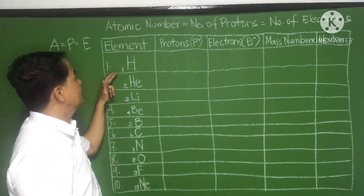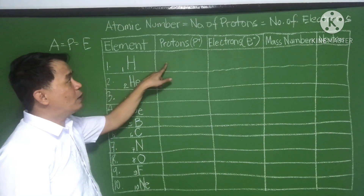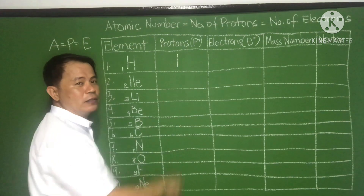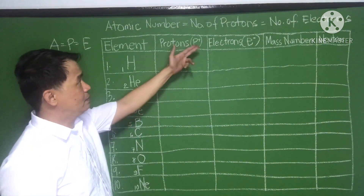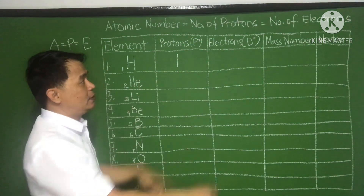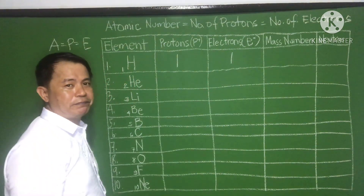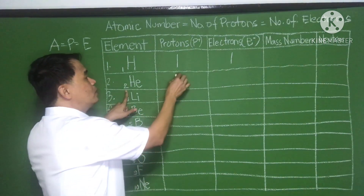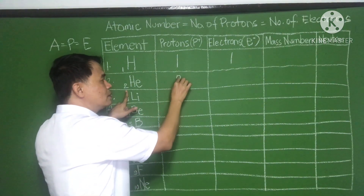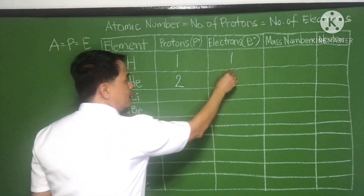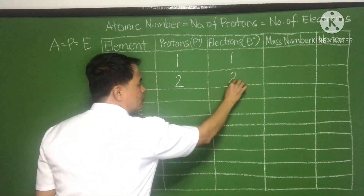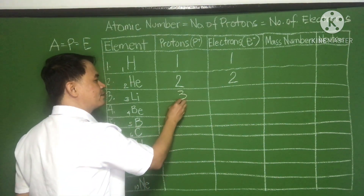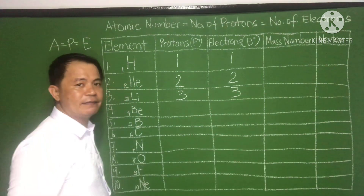For hydrogen, the atomic number is one, so the number of protons is one and the number of electrons is one. For helium, atomic number is two, protons two, electrons two. For lithium, three — protons three, electrons three.